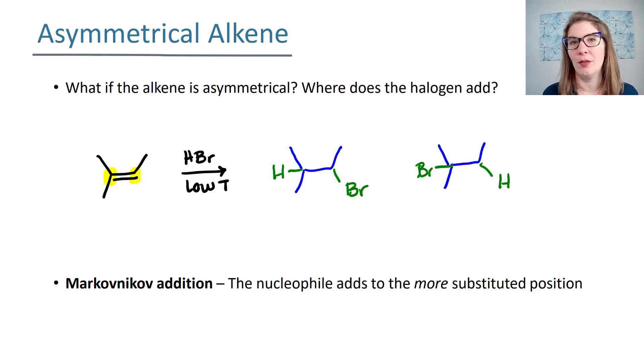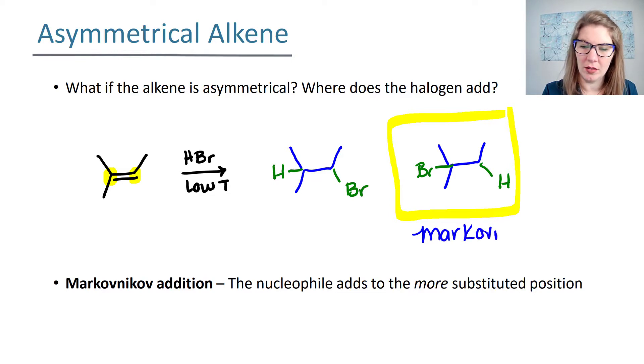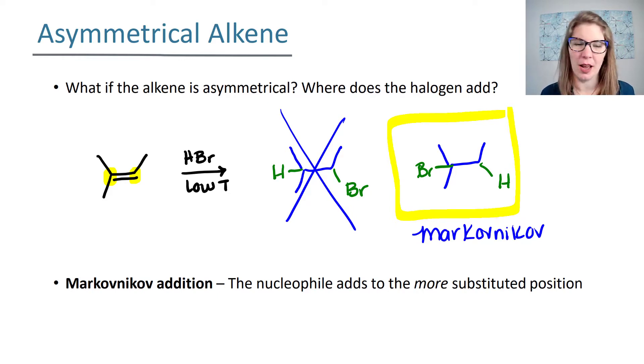This is called a Markovnikov addition. It's called a Markovnikov addition because some guy named Markovnikov recognized that there's a pattern where the nucleophile often adds to the more substituted position. For us, that means of these two products, this is going to be the one that forms. This is your Markovnikov product where the bromine is at the more substituted position. Where the bromine adds to the less substituted position is not going to form, and this would be called the anti-Markovnikov product.